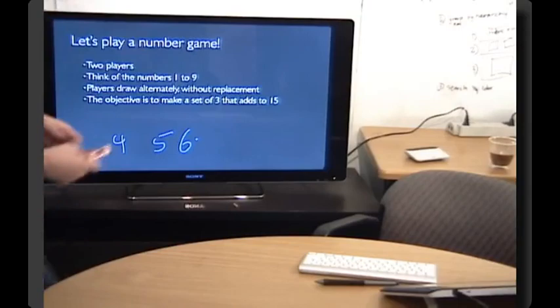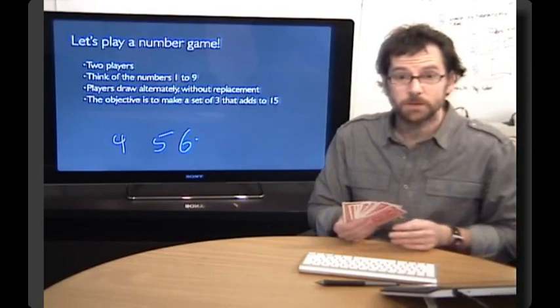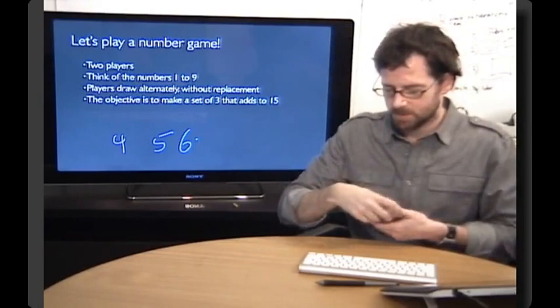So we can make this a little bit easier. So let's say instead of having it be numbers imaginary in our head, we'll do the same thing, but with playing cards. And so I'm going to be able to have the numbers one through nine here, or ace through nine. So here we have the playing cards, ace through nine. And again, two players.